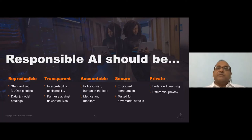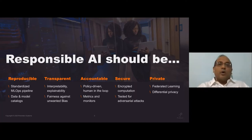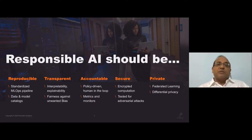The next aspect — probably the most important — is accountability. This gets into policies, and a lot of discussion is happening even at the government level. What policies drive your AI outcomes? This is where a human in the loop is very important. At what stage do you bring the human in? There's also a lot of focus on metrics and monitoring: you deploy a model to production, accuracy goes down — how do you measure it, what metrics do you employ, how do you control it? This is where we talk about data drift and concept drift.